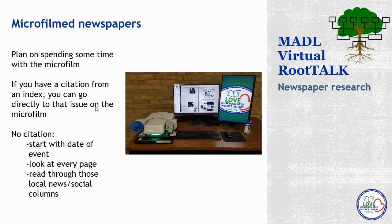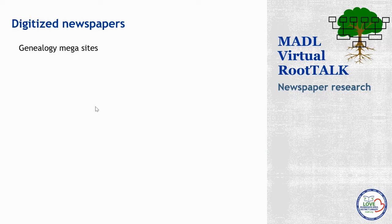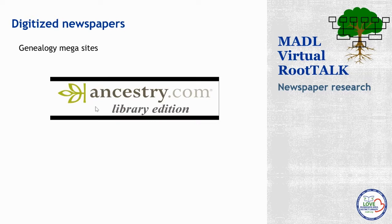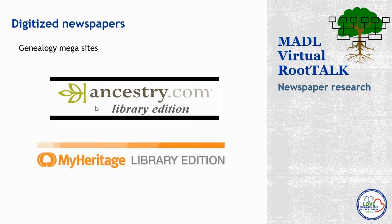Now let's take a look at what our digitized newspaper options are. Interestingly, the big genealogy mega sites that the Muskegon Area District Library subscribes to — both Ancestry Library Edition and the MyHeritage Library Edition — actually don't have digitized historical newspapers as part of their library subscription offering, or they have duplicate images that can be found elsewhere. This is one of the few Root Talk sessions where we're not really going to rely on Ancestry Library Edition or MyHeritage Library Edition to do our research.